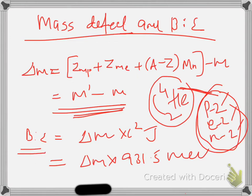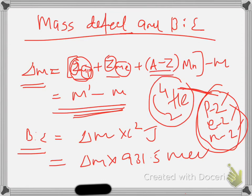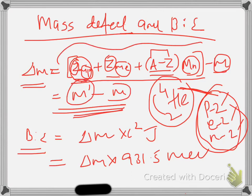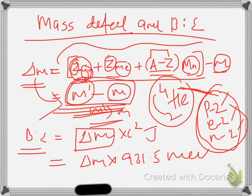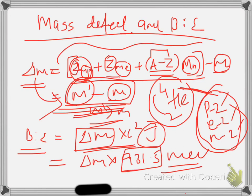The mass defect delta m equals: (Z × mass of proton) + (Z × mass of electron) + ((A − Z) × mass of neutron), which is the expected total mass, minus the real mass m. Since m-dash is always greater than m, we get a positive value — that is the mass defect. This mass defect is converted to energy by Einstein's mass-energy relationship: E = Δm × c². To express this energy in joules, use this equation; to express it in million electron volts (MeV), multiply by 931.5.